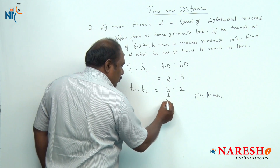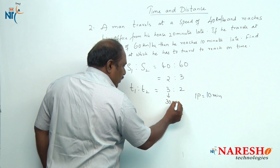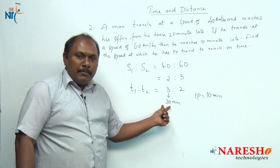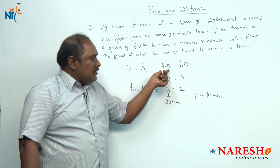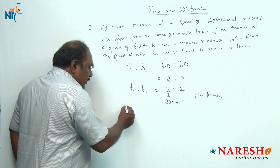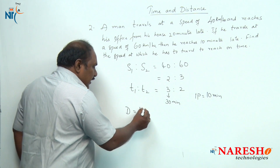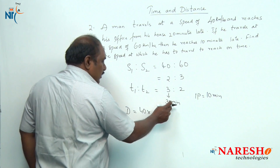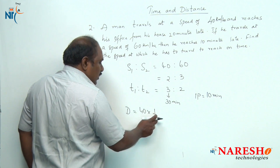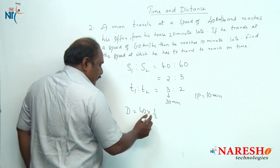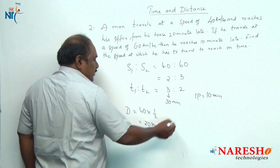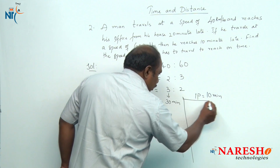Three parts should be equal to 30 minutes. This 30 minutes is the time taken by him to reach his office travelling at a speed of 40 kilometers per hour. Travelling at 40 kilometers per hour he is taking half an hour — 30 minutes — to reach his office. So distance = speed × time = 40 × 0.5 = 20 kilometers. The distance from his house to office is 20 kilometers.